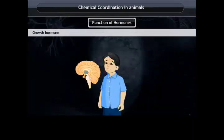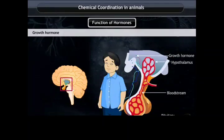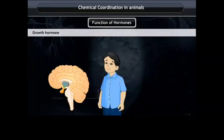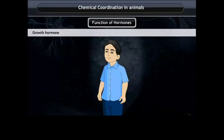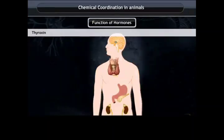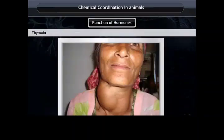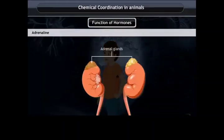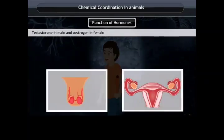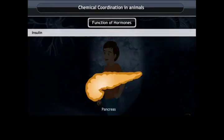Function of Hormones. The pituitary gland secretes growth hormones. Insufficient secretion during childhood leads to dwarfism, while over-secretion results in extreme tallness called gigantism. Iodine is necessary for the thyroid gland to make thyroxine for balanced growth; deficiency of iodine results in goiter, or a swollen neck. The adrenal glands secrete adrenaline, which coordinates body organs during fear and fight situations. During puberty, the gonads secrete testosterone in males and estrogen in females. The pancreas helps control blood glucose levels by secreting insulin.